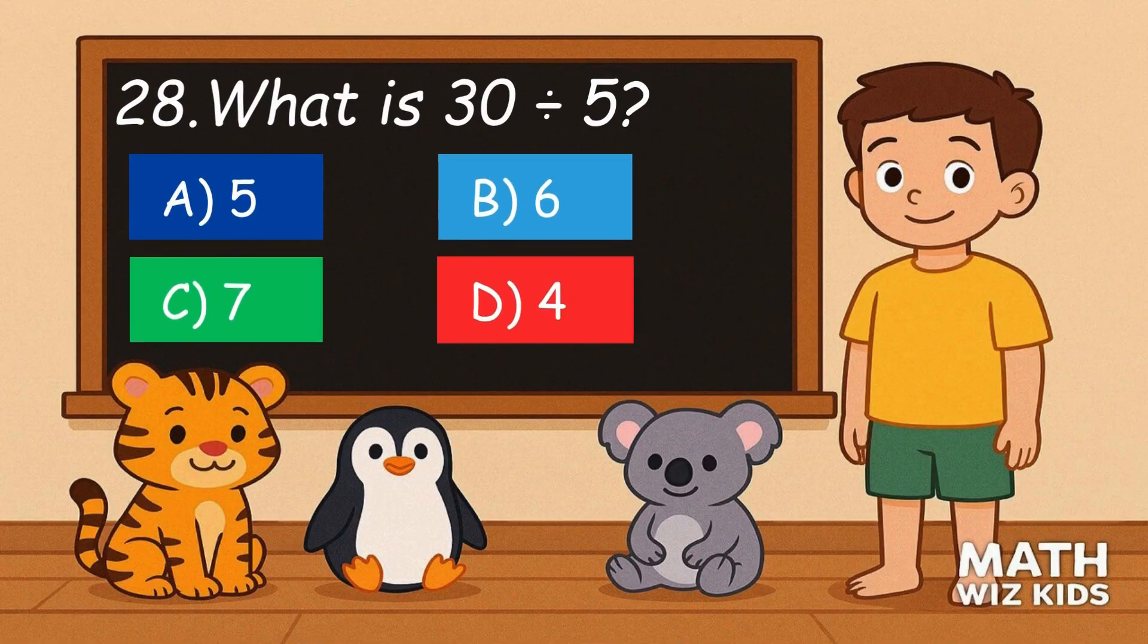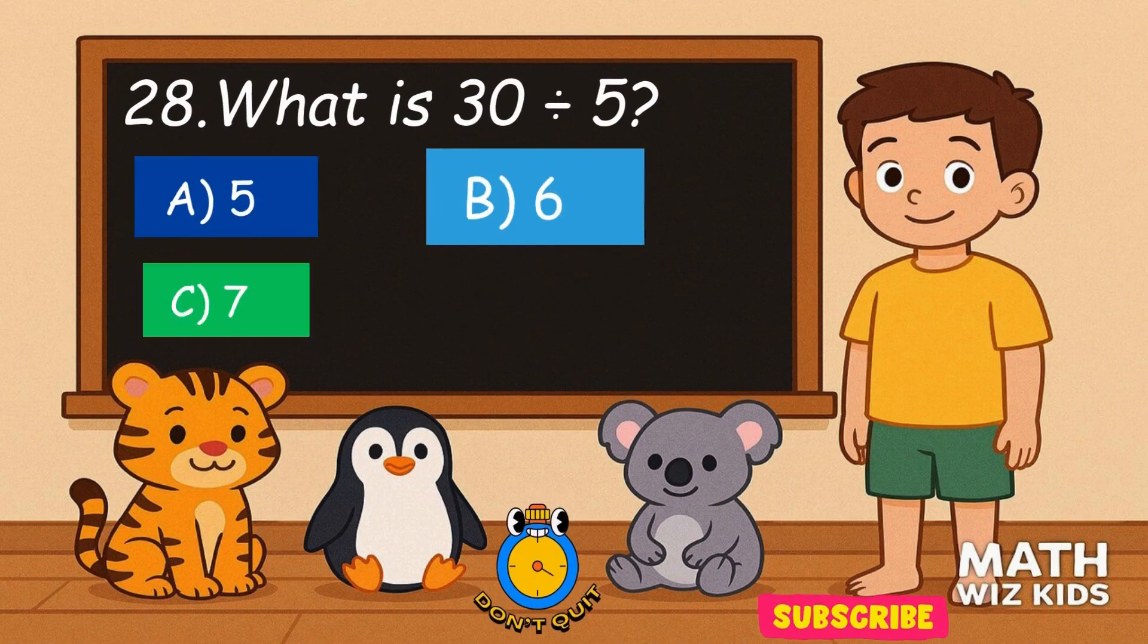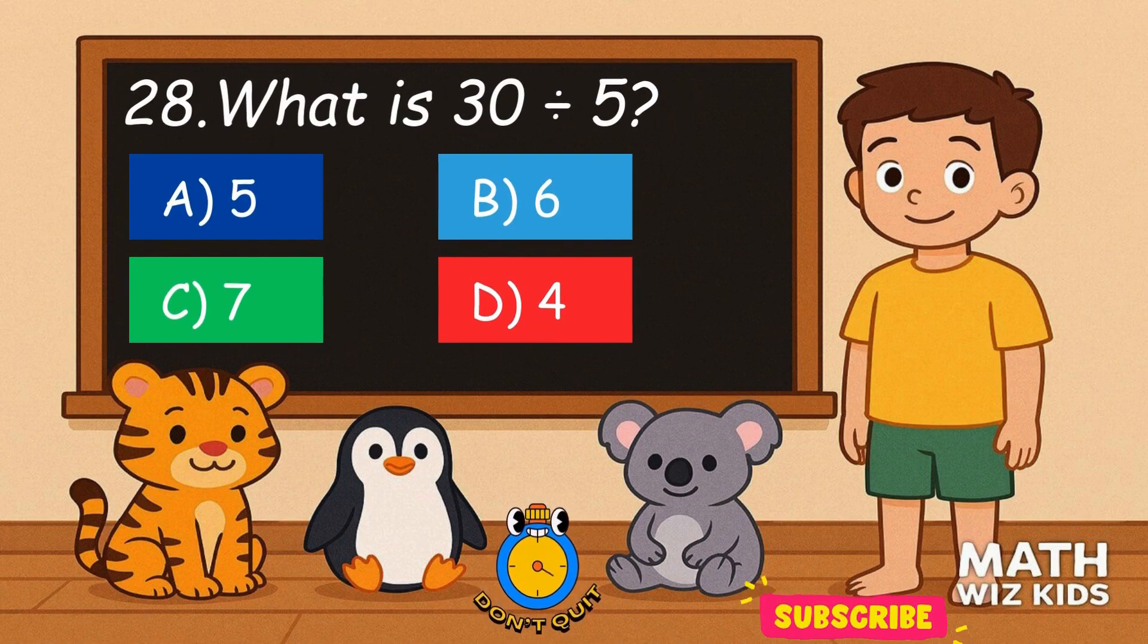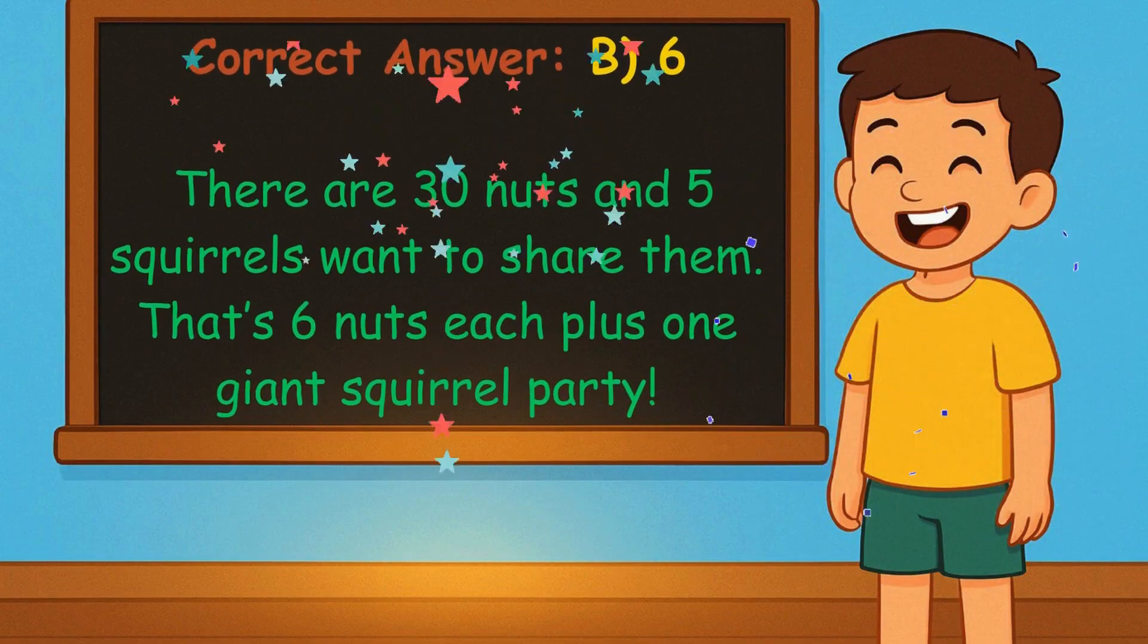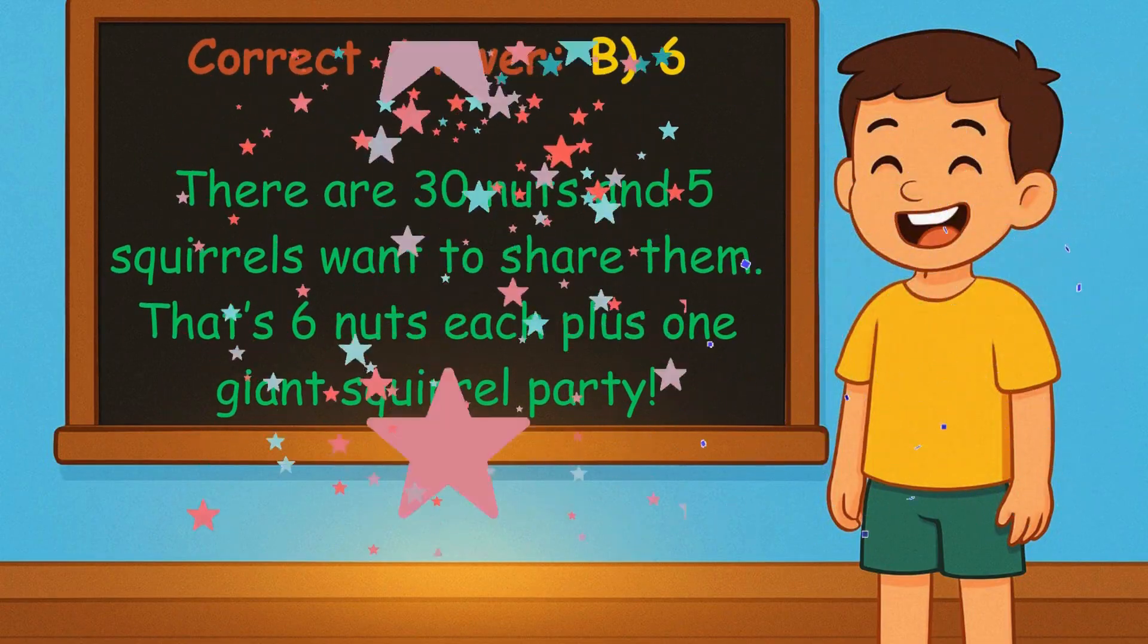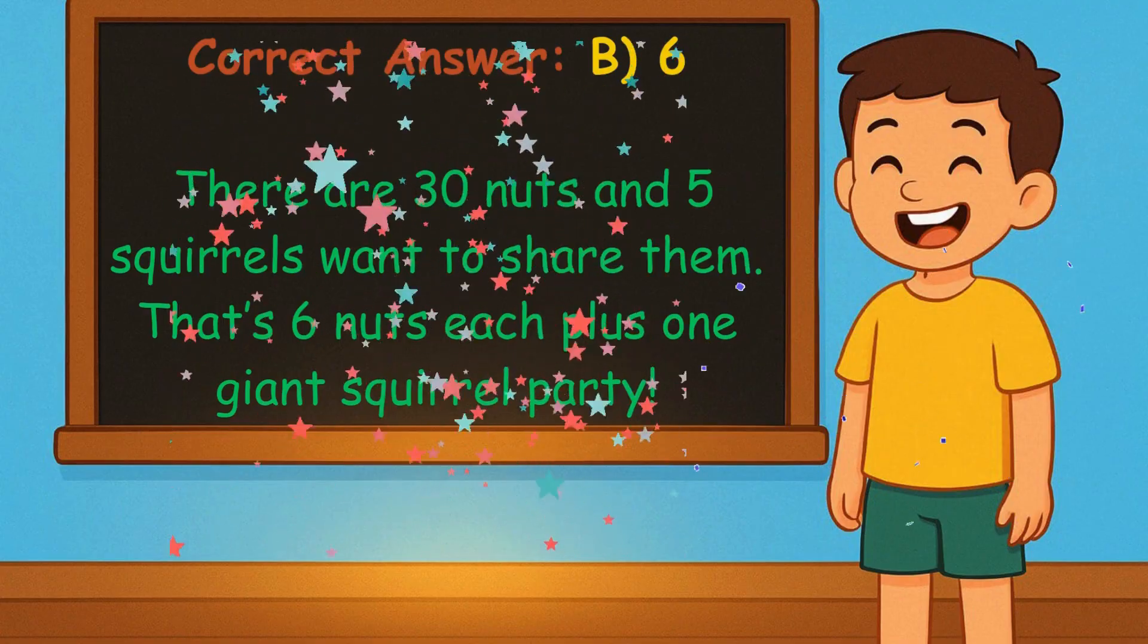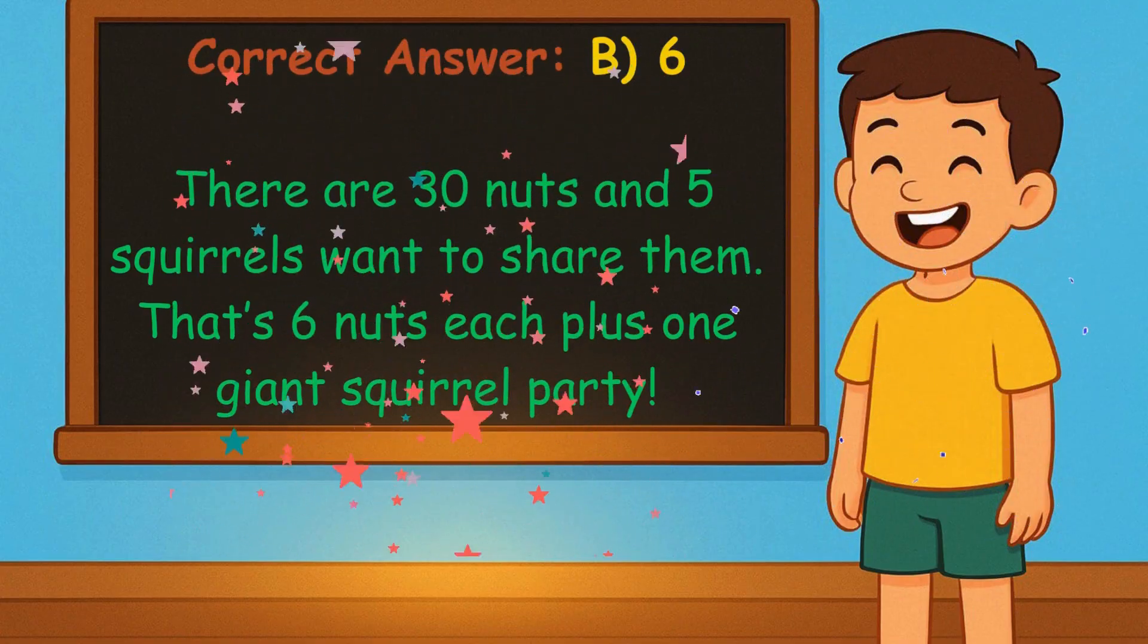28. What is 30 divided by 5? Is it A, 5, B, 6, C, 7, or D, 4? Correct answer is 6. There are 30 nuts and 5 squirrels want to share them. That's 6 nuts each. Plus 1 giant squirrel party.